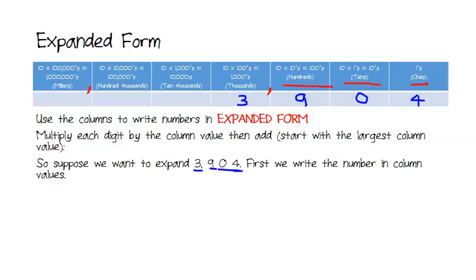And once we've written them in, then we simply multiply each of these digits by their column value and then add them up. So, the first one we're going to start with then is going to be the 3's. So, it's going to be 3 times 1,000.